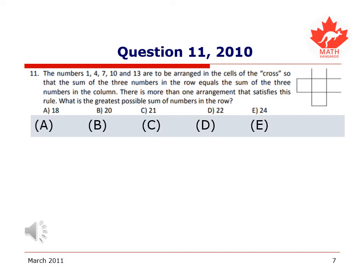Sticking with the 2010 test, let's look at the very next question, question 11. The numbers 1, 4, 7, 10, and 13 are to be arranged in the cells of the cross seen to our right so that the sum of the three numbers in the row equals the sum of the three numbers in the column. There is more than one arrangement that satisfies this rule, but we want to know what's the greatest possible sum of numbers in the row, which would be the same as the sum of numbers in the column.